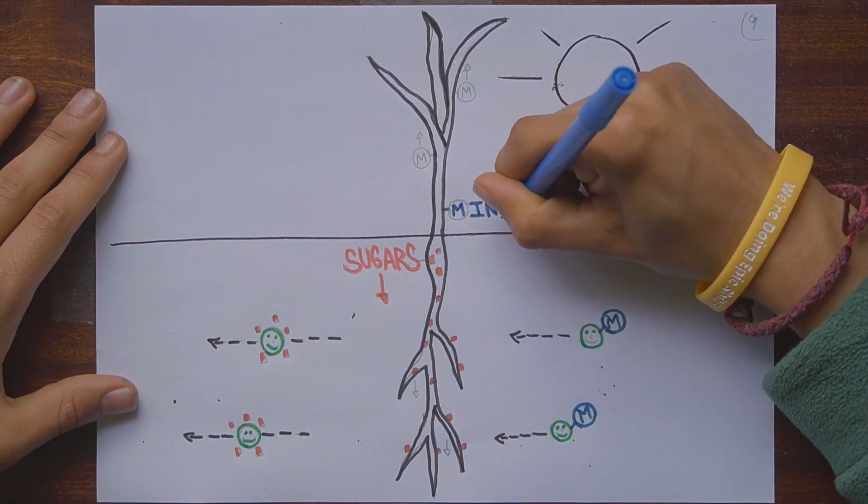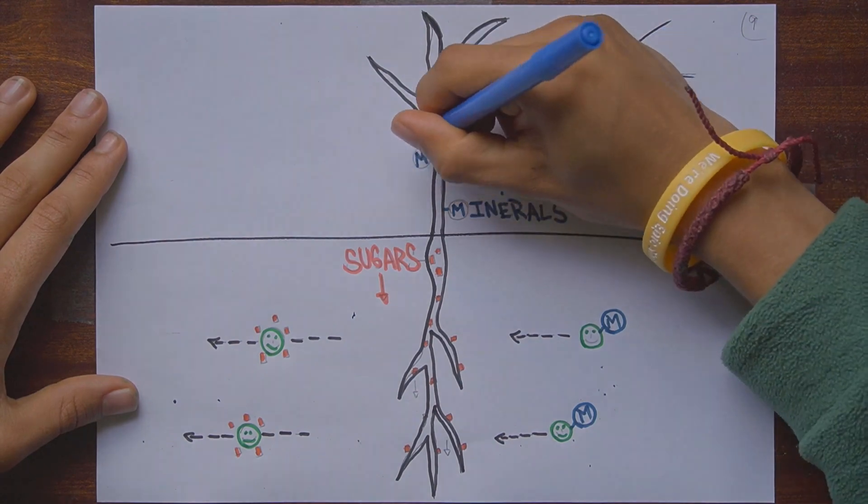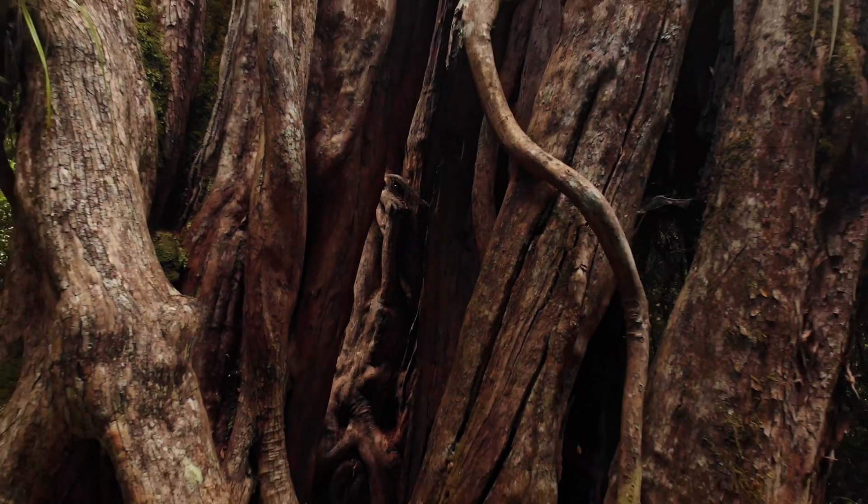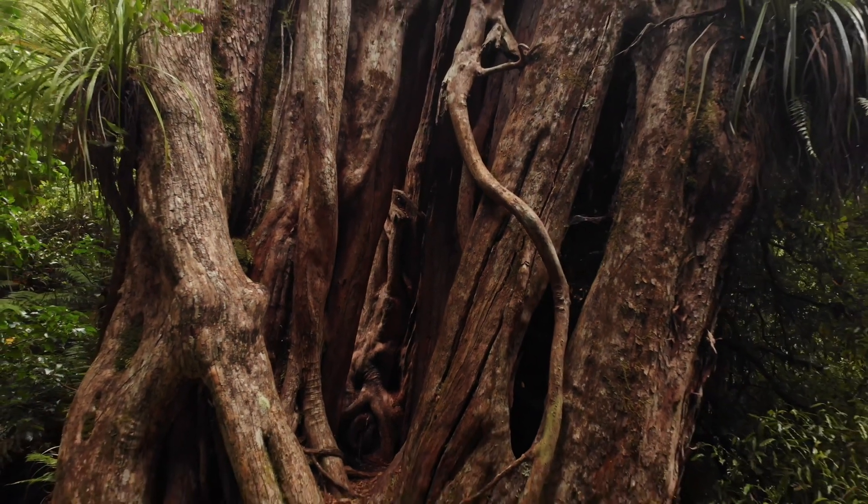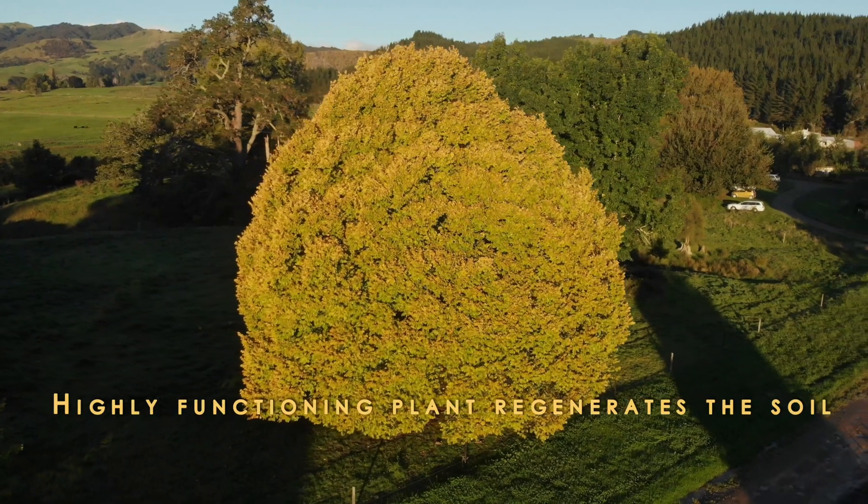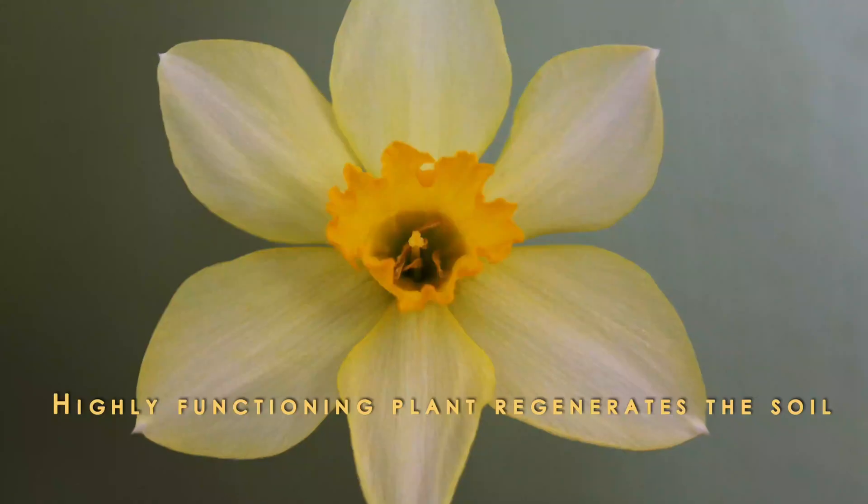When a plant is photosynthesizing efficiently and making high levels of sugars, more and more of these sugars are fed into the soil to support the humus building process. Basically, a highly functioning plant builds and regenerates the soil.